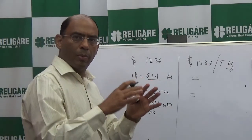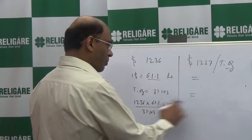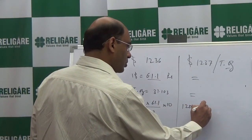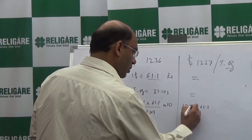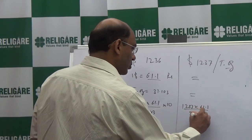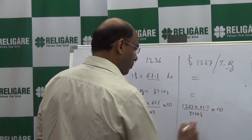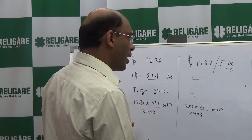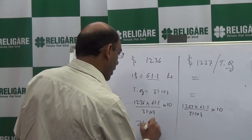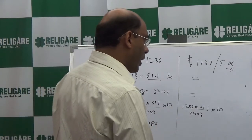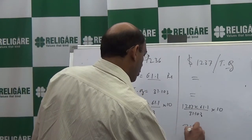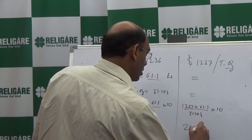On the left-hand side — at $1,236 — you calculate 1236 × 61.1 ÷ 31.103 × 10, and on the right-hand side — at $1,237 — you calculate 1237 × 61.1 ÷ 31.103 × 10. The left-hand side gives ₹24,280 and the right-hand side gives ₹24,300.